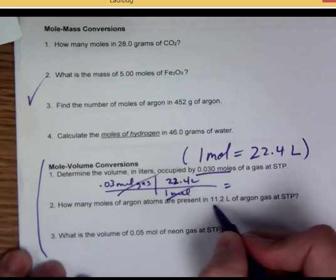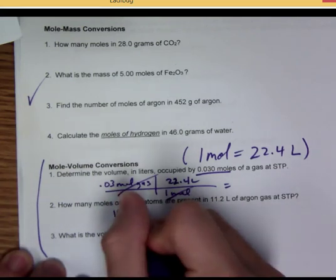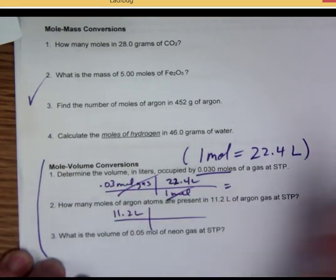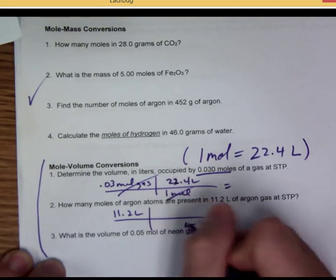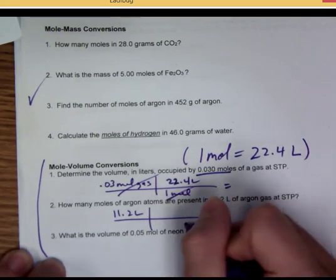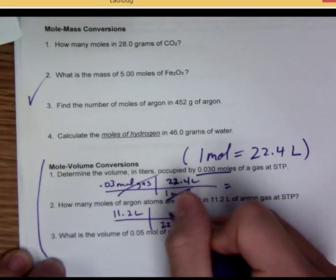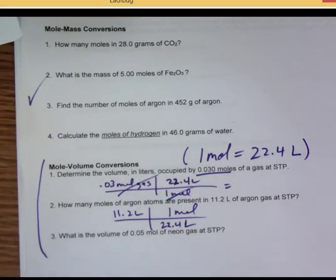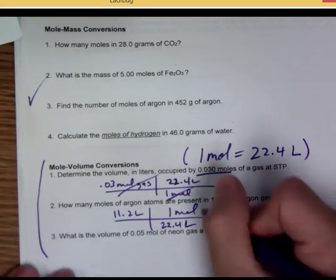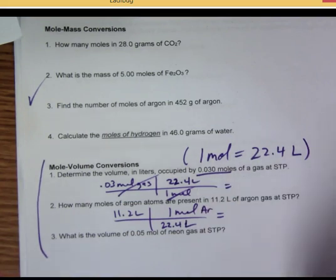And when you start with liters on number 2 here. 11.2 liters. Then you know liters go down here. What do we know about liters? 22.4 liters is one mole. Of that argon gas. Argon. All right. Pretty simple there.